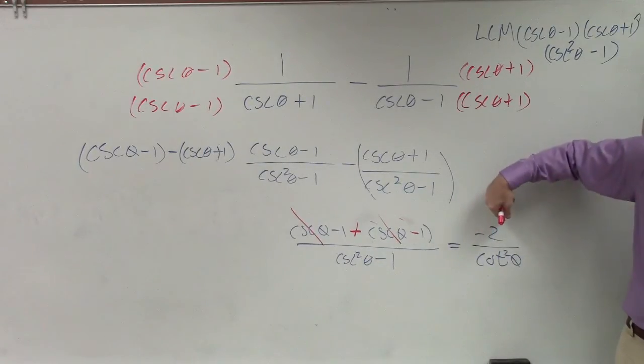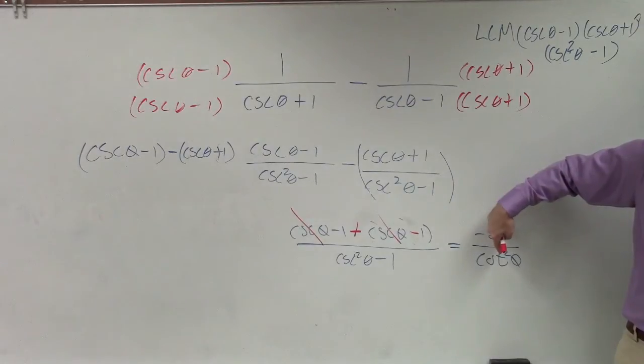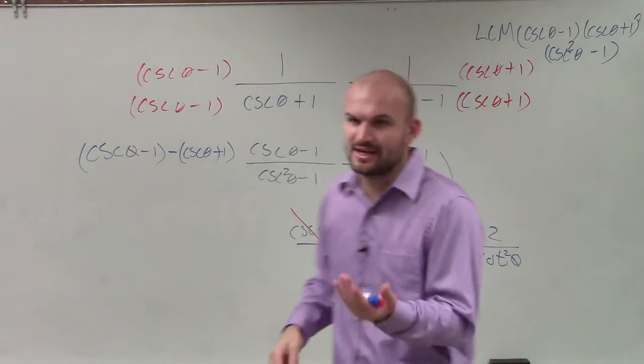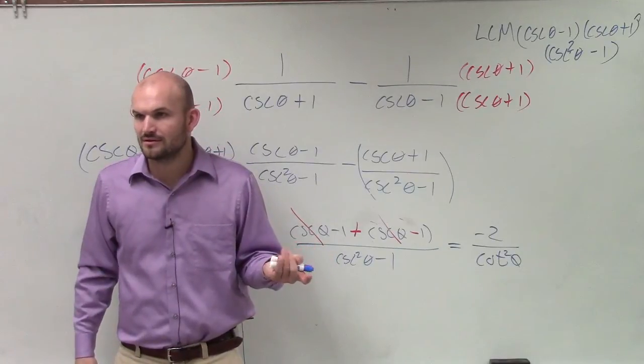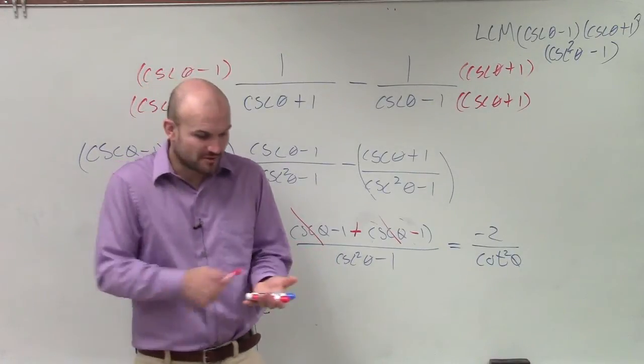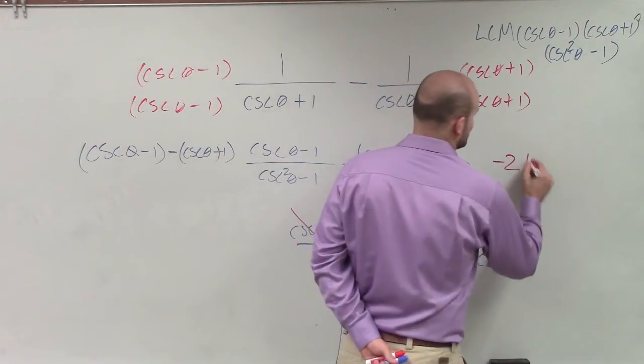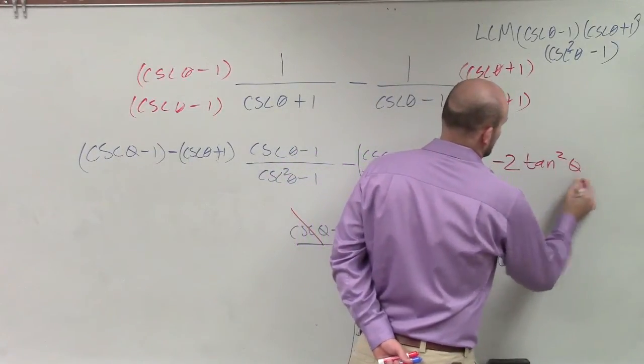If I have a negative 2 up top, that's cool. But now I have cotangent squared in the bottom. What is the same thing as 1 over cotangent squared? Tangent squared. So my final answer is going to be negative 2 tangent squared of theta.